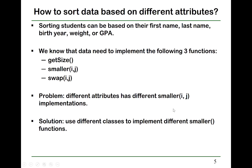How do you sort a database on different attributes? Suppose you have student records that can be sorted based on first name, last name, birth year, weight, GPA, and so on. The data needs to provide three functions: get_size, smaller, and swap. The problem is that different attributes have different implementations of smaller. Sorting by GPA is one implementation; sorting by last name or first name is a different implementation. The solution is to use different classes to implement different smaller functions.